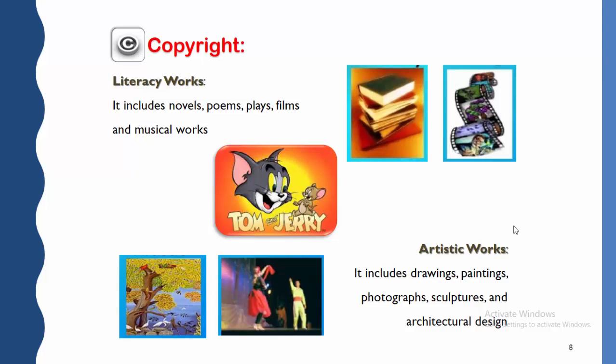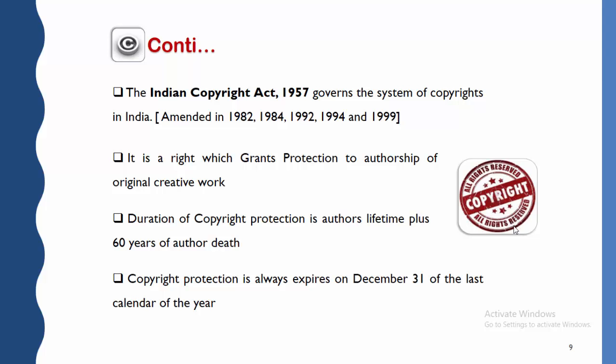The Indian Copyright Act of 1957 governs the system of copyrights in India, which was amended in 1982, 1984, 1992, 1994, and further in 1999. It grants protection to the authorship of original creative work, giving the proper right to the author of original creative work. The duration of copyright protection is the author's lifetime plus 60 years after the author's death. Copyright protection always expires on December 31st of the last calendar year.